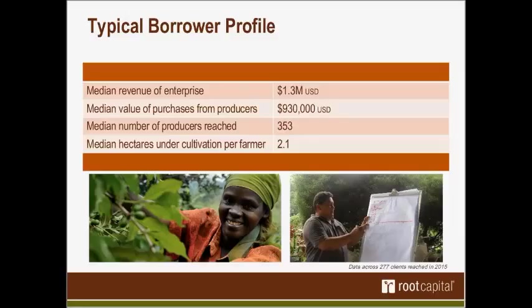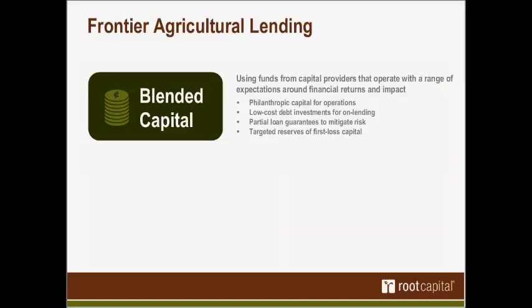Let me explain a few of the ways that we're addressing these challenges and trying to overcome the high costs and relatively higher risks of frontier agricultural lending. The pure economics of this type of lending can be difficult. We address this in two different ways. The first is by having access to a blend of capital from donors, public agencies, and private investors. Our balance sheet incorporates philanthropic contributions, below-market capital, market-rate capital guarantees, and in some cases subordinated debt.